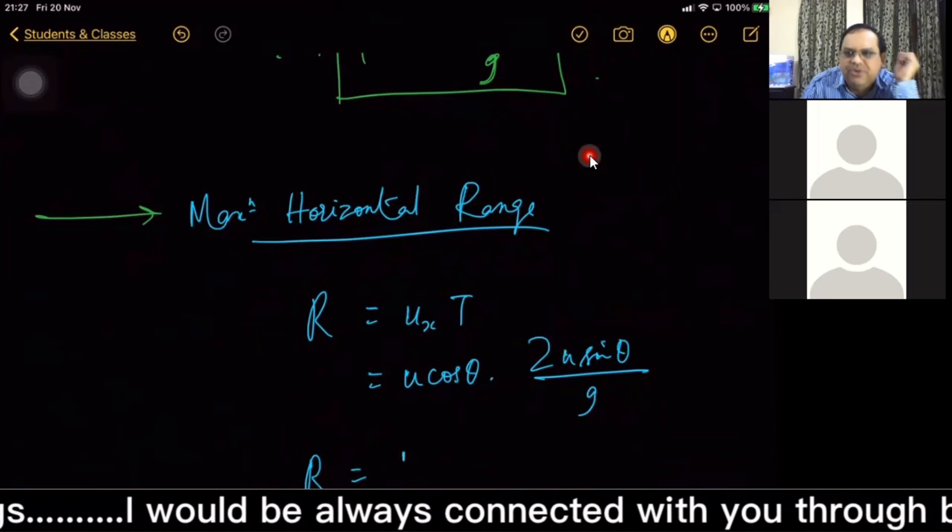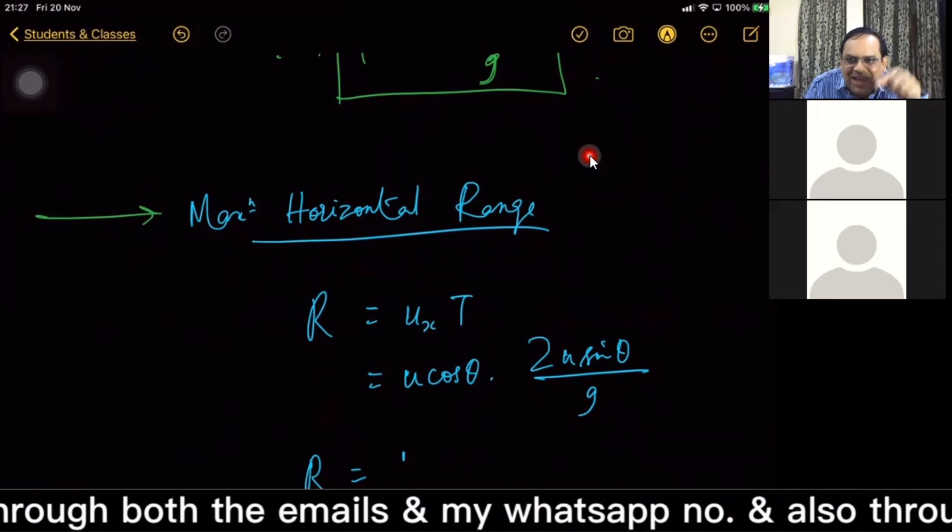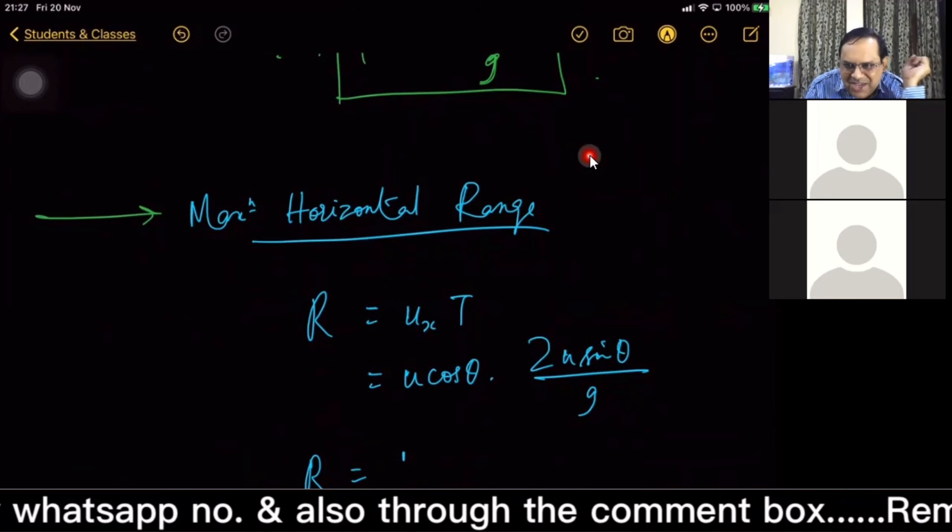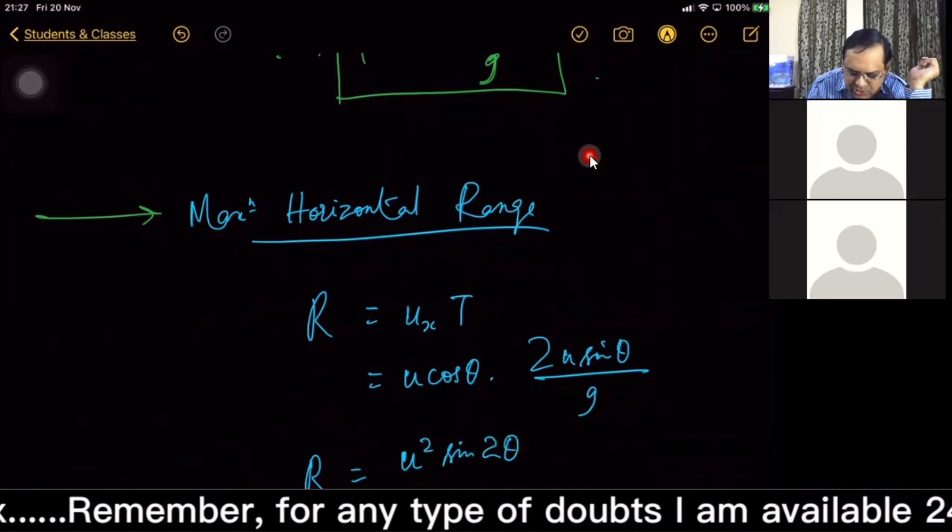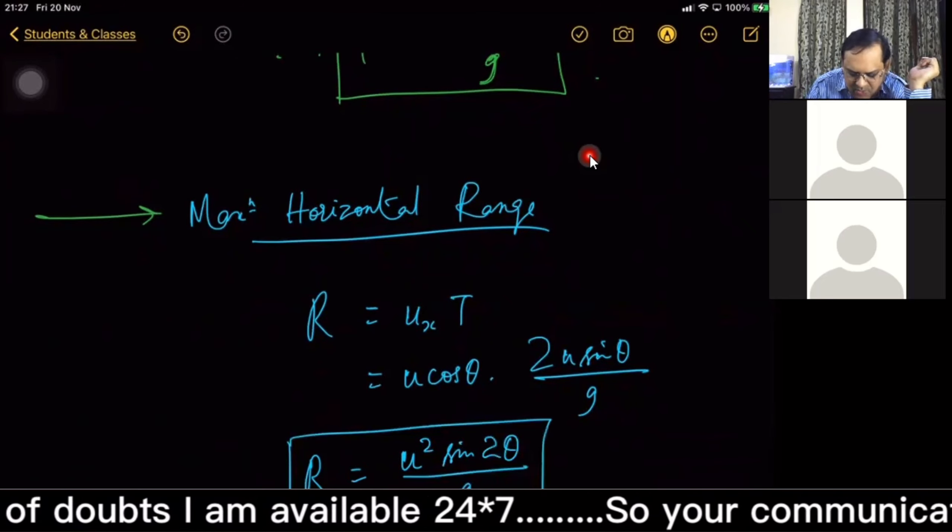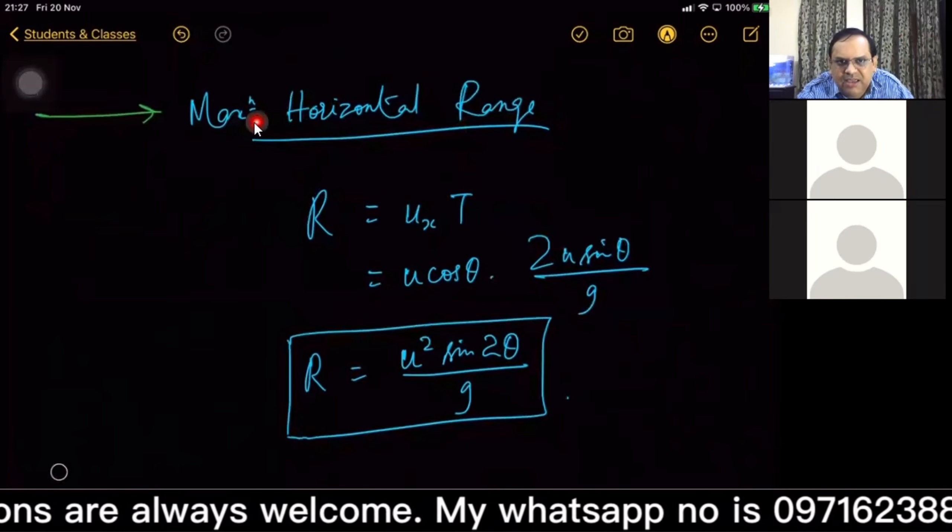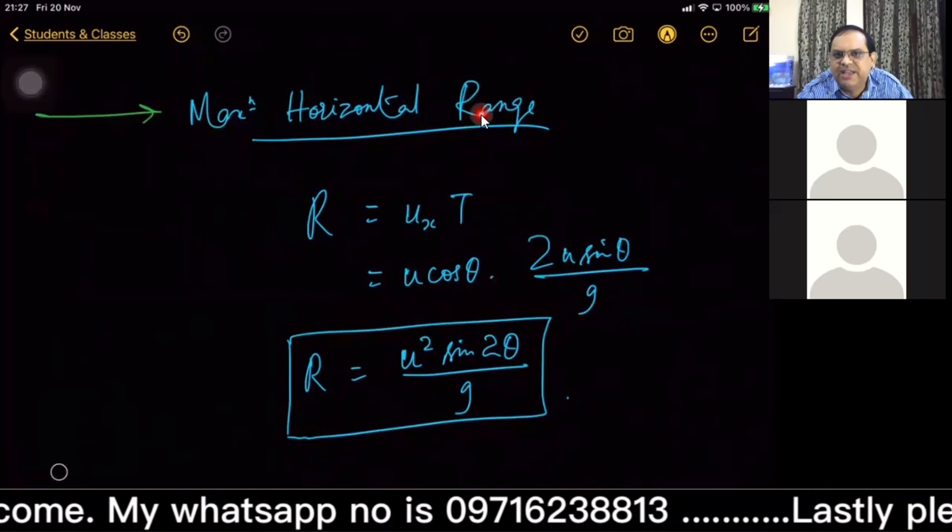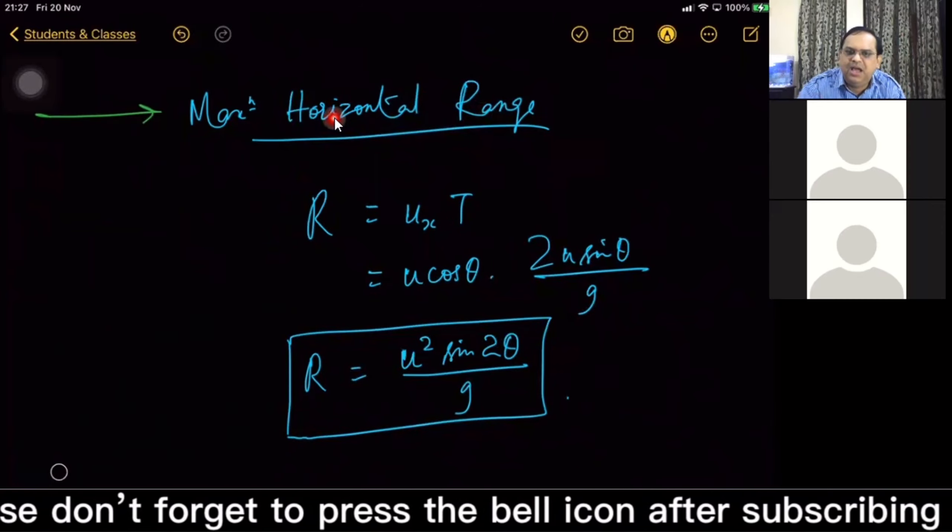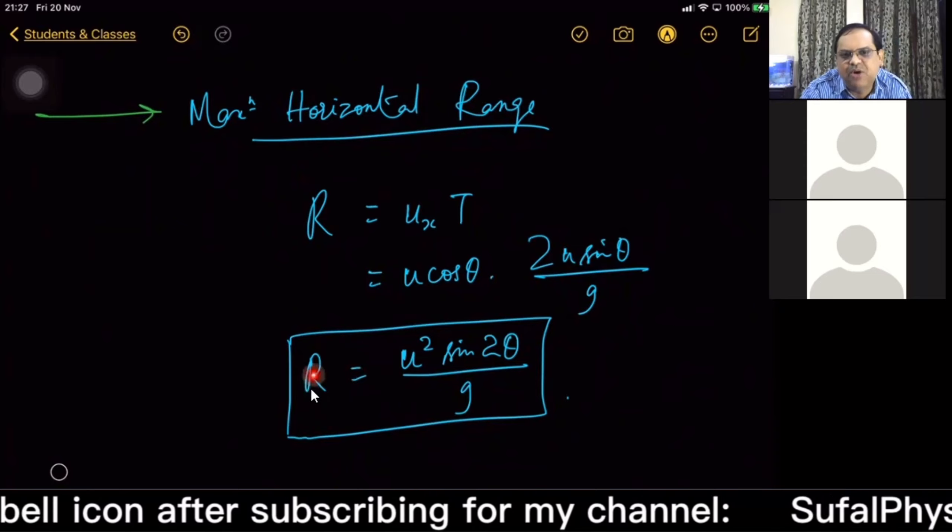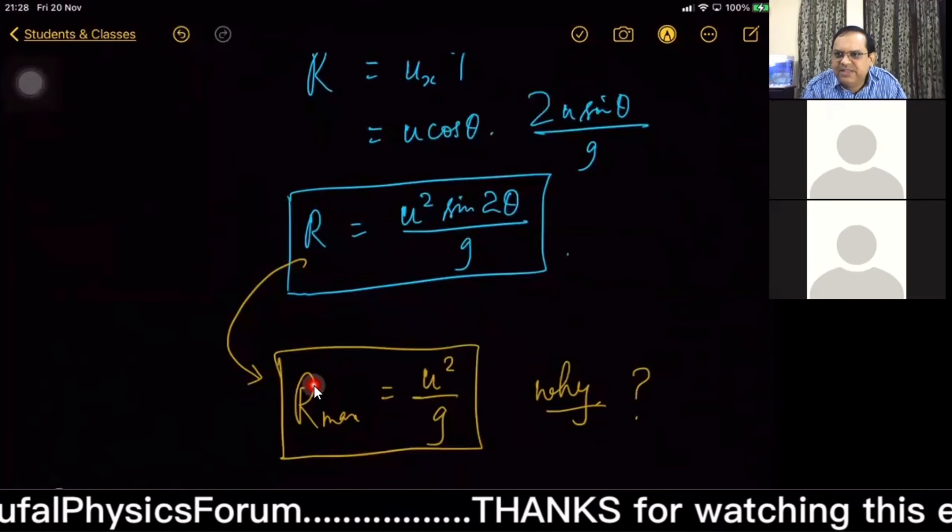So you are a student, u² sin 2θ / g. But now, yahaan se hai two new stories. Firstly, pehle se hi humne isko maximum horizontal range naam diya tha. Now maximum, already it is maximum.